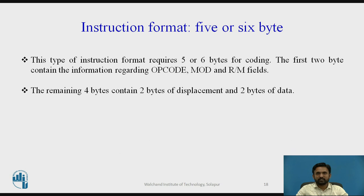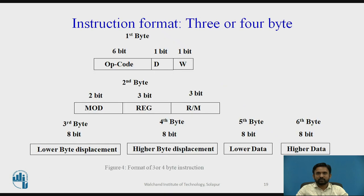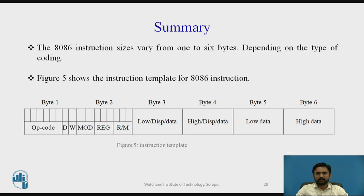The instruction format of 5 or 6 bytes: this type requires 5 or 6 bytes for coding. The first 2 bytes contain information regarding the opcode, MOD, register, and R/M fields. The remaining 4 bytes contain 2 bytes of displacement and 2 bytes of data. Instruction templates are used for each basic instruction to generate the opcode by filling the bits in the template corresponding to that instruction — in other words, opcodes are generated on a bit-by-bit basis.